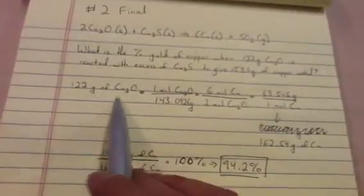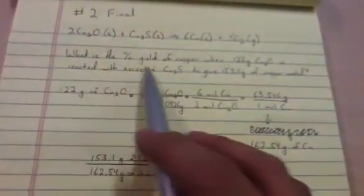That means that in a perfect world, I should be able to get 162.54 grams of copper from 122 grams of copper oxide.